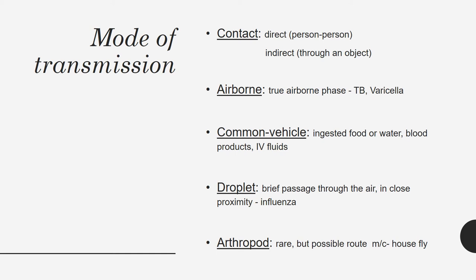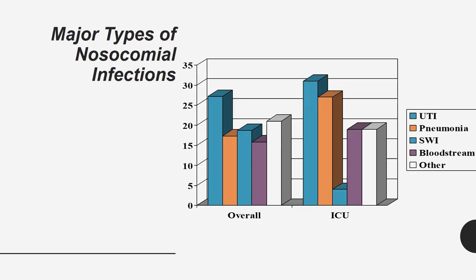This graph represents the major types of nosocomial infection. Overall, the highest number is urinary tract infection (UTI), followed by pneumonia, surgical site infections, bloodstream infections, and other infections. UTI is the most common type and mainly occurs in females.